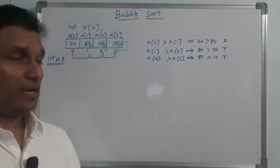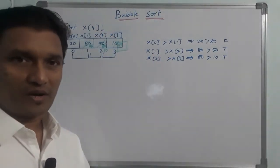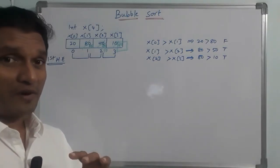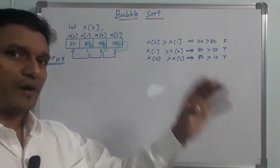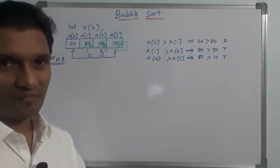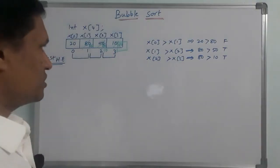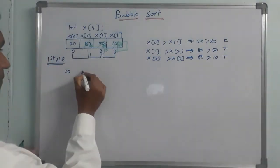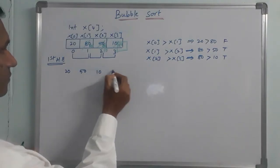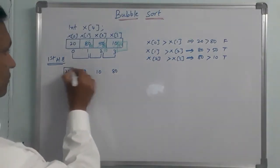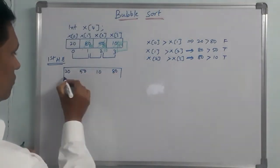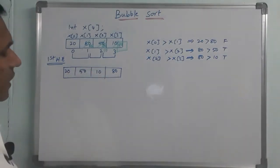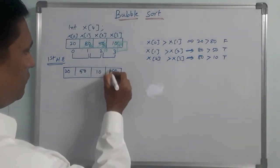After the first pass, 80 is fixed at the last position as the highest element in the list. The remaining elements are 20, 50, and 10. Now we proceed to the second pass.